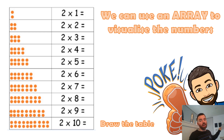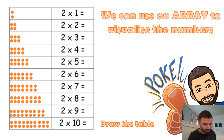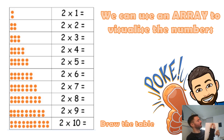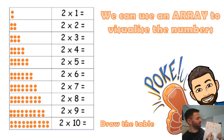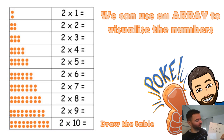We can actually move on to what we call arrays. Arrays are a way to visualize a number, especially a way to visualize a times table. So for example, if I have two times three — what that really means is two groups of three. So I could have one group of three, two groups of three. And then to find the answer to two times three, I just count it up: one, two, three, four, five, six. One group of three, two groups of three equals six.